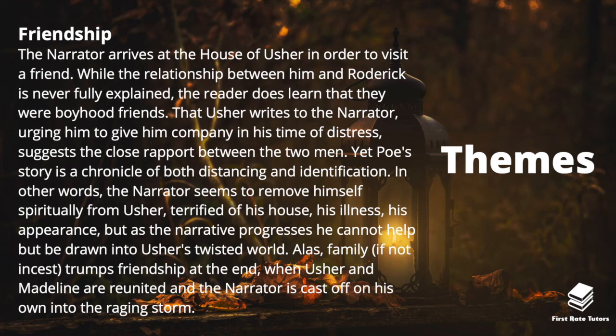The other theme is friendship. The narrator arrives at the House of Usher to visit a friend, and while the relationship is never fully explained, the reader learns they were boyhood friends. That Usher writes urging the narrator to give him company in his time of distress suggests a close rapport. Yet Poe's story is a chronicle of both distancing and identification — the narrator seems to remove himself spiritually from Usher, terrified of his house, his illness, his appearance, but as the narrative progresses he can't help but be drawn into Usher's twisted world. Ultimately, family — if not incest — trumps friendship when Usher and Madeline are reunited and the narrator is cast off into the raging storm.